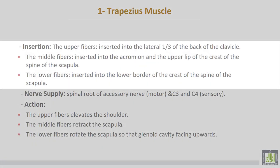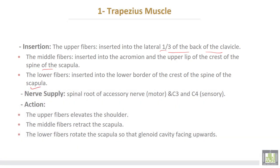The insertion of trapezius muscle: the upper fibers insert into the lateral third of the back of the clavicle, the middle fibers insert into the acromion and upper lip of the crest of the spine of the scapula, and the lower fibers insert into the lower border of the crest of the spine of the scapula. The nerve supply is double: the spinal root of the accessory nerve is motor, and cervical three and four provide sensory and proprioceptive innervation.